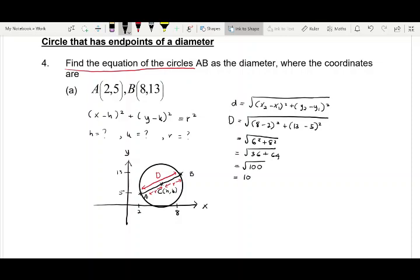Since the radius is half of our diameter, and the diameter that we get is 10, the radius would be 5.